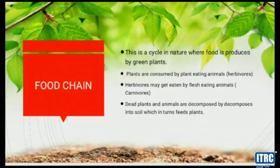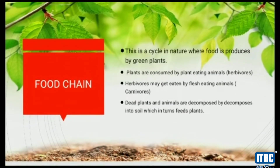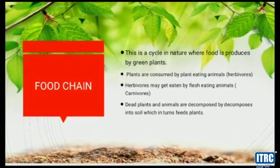Next, what is food chain? Food chain is a cycle of nature where food is produced by a green plant. Plants are consumed by plant-eating animals called herbivores. Herbivores may get eaten by flesh-eating animals called carnivores. Dead plants and animals are decomposed by decomposers into soil, which in turn feeds plants.